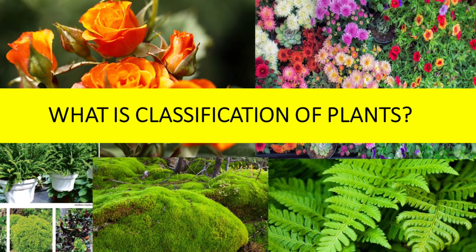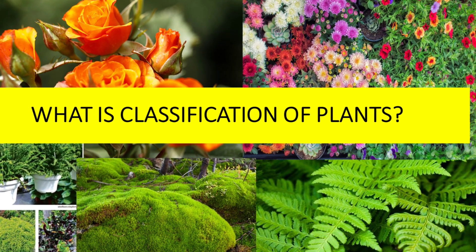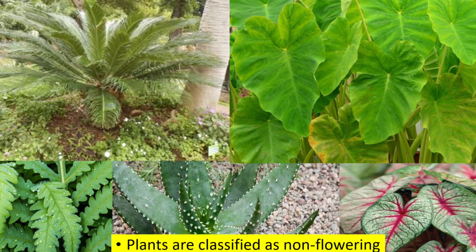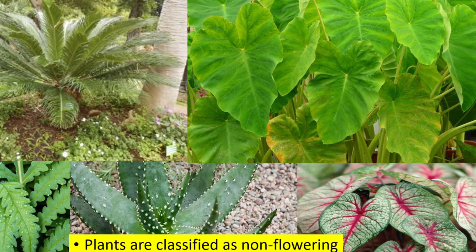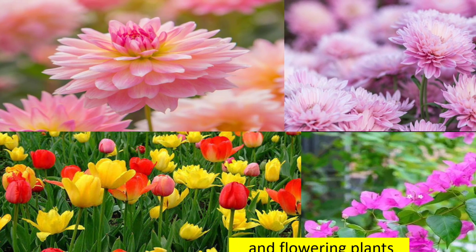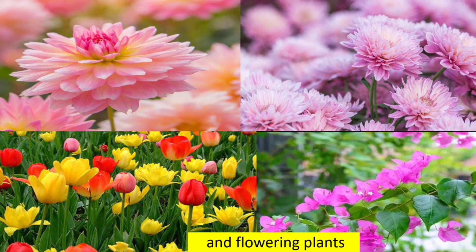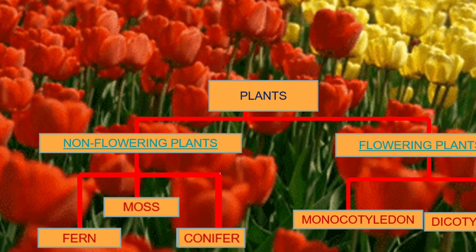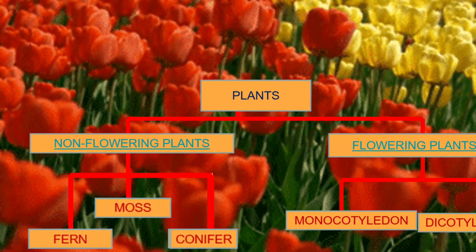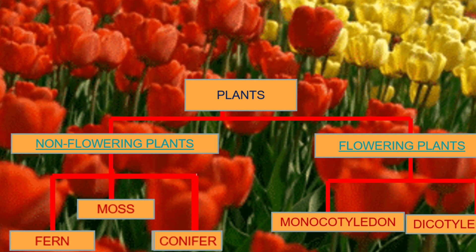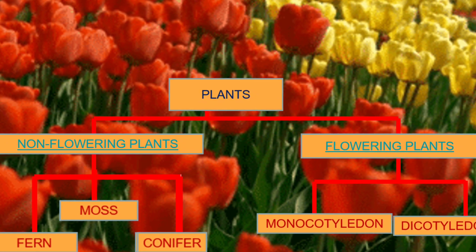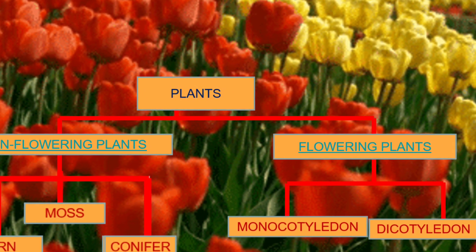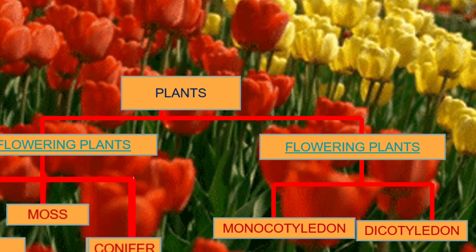Let me discuss what is the classification of a plant. Plants are classified as non-flowering and also flowering plants. Take a look at the flowchart of the types of plants. Non-flowering plants consist of ferns, mosses, and conifers. Meanwhile, flowering plants consist of monocotyledons and dicotyledons.